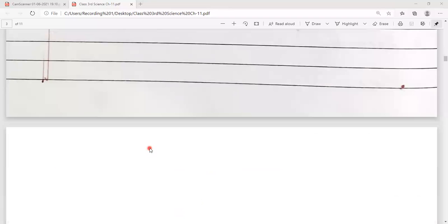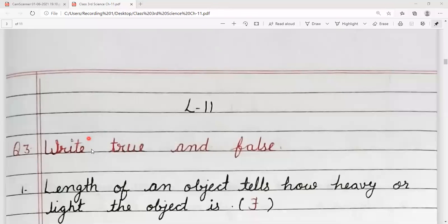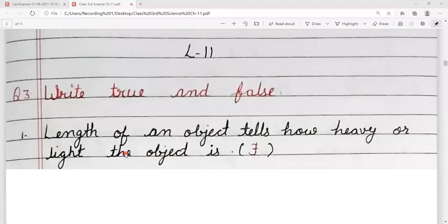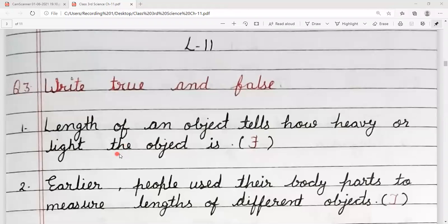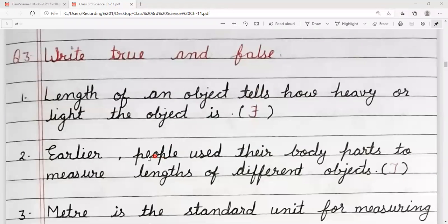Next question, question number 3. Write true and false. Number 1, length of an object tells how heavy or light the object is. Length, who yeh batati hai ki kaun sa object heavy hai ya light hai. No, it is false.